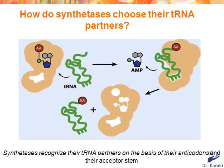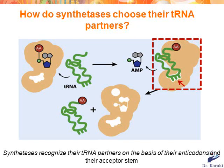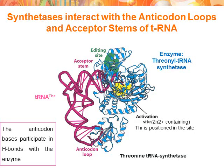We have seen together the classes of synthetases, their role, their structure containing an active site, and in some cases an editing site for proofreading. Now we will see how synthetases choose their partner tRNAs. Some synthetases recognize their partner tRNAs primarily on the basis of their anticodon, although they may also recognize other aspects of tRNA structure like the acceptor stem. Let's consider the structure of the complex between threonine tRNA synthetase in blue and its partner tRNA (tRNA-Thr) in pink.